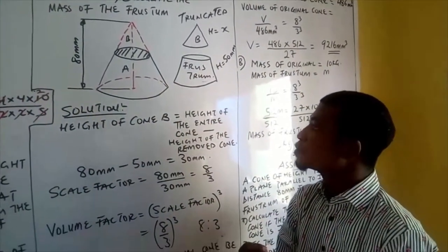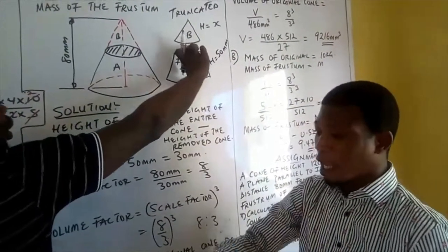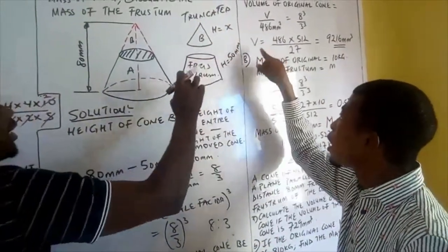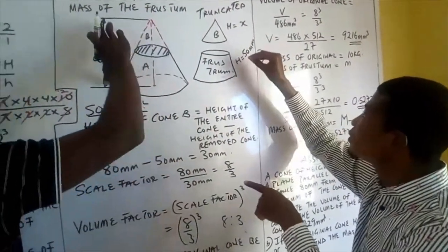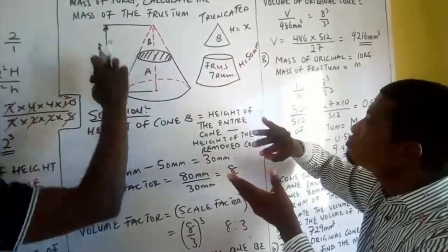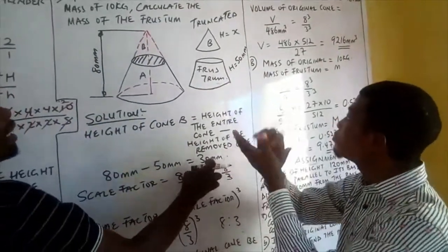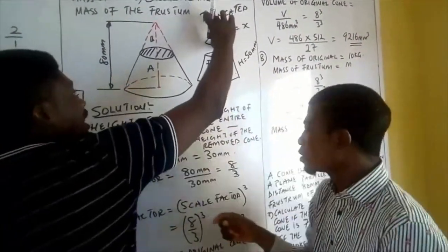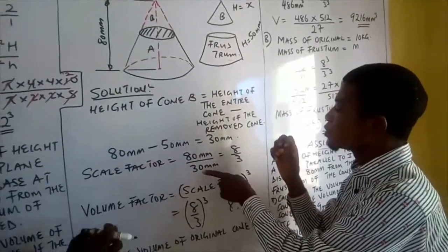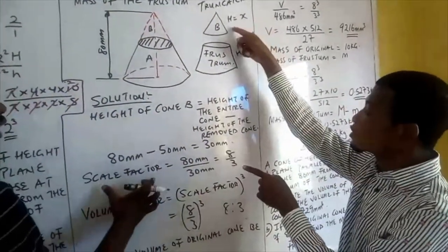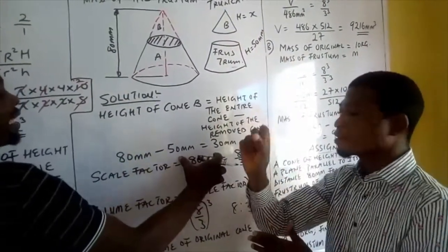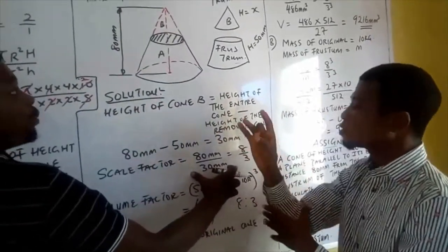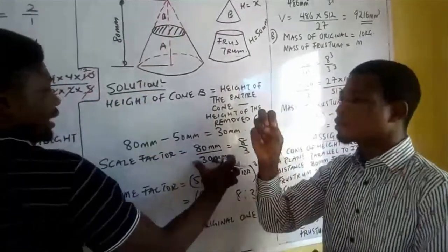We have the height of this frustum cone as 50 millimeters. We simply use that if you remove 50 from 80, it will give you 30 millimeters, which is the height of this truncated cone. The scale factor becomes the height of the entire cone, which is 80, over the smaller cone, which is 30.